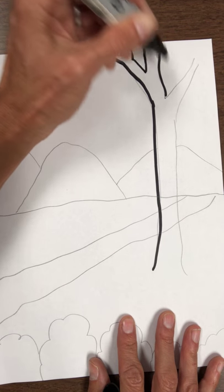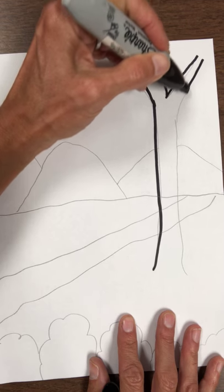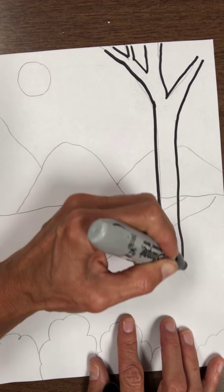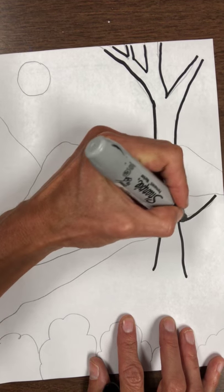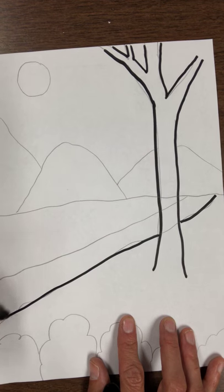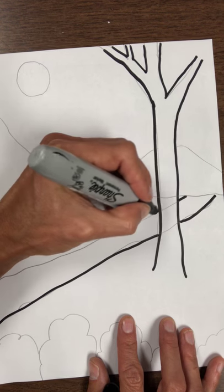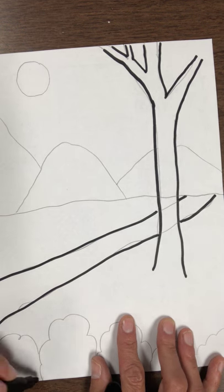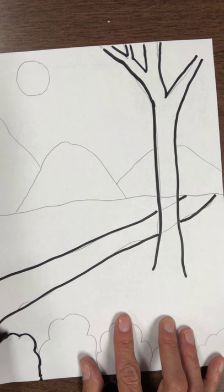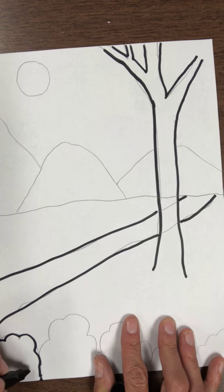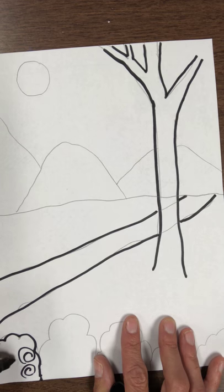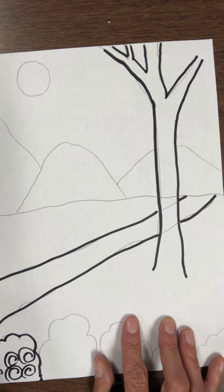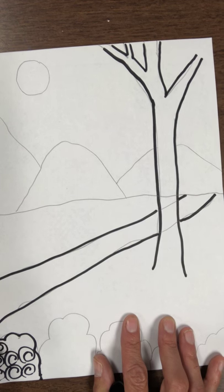And when that is finished you're going to fill in every different space with one of the many textures that you chose for your picture. So I may decide to put swirls in my bushes and that's the texture for that one.